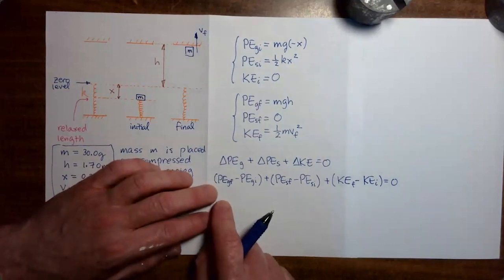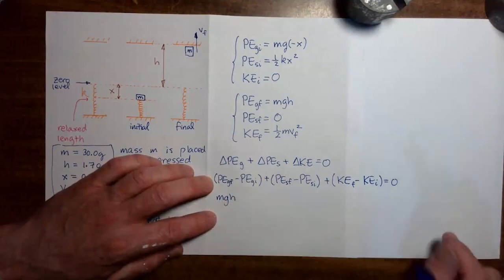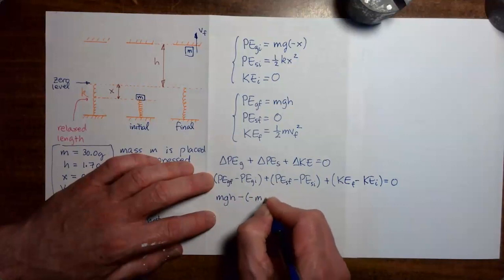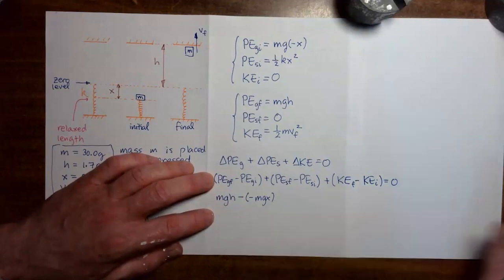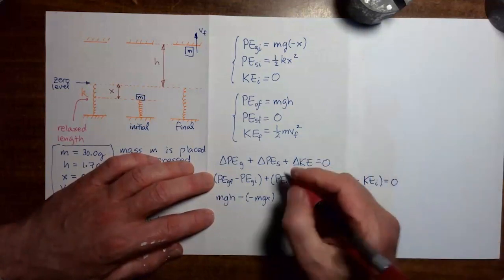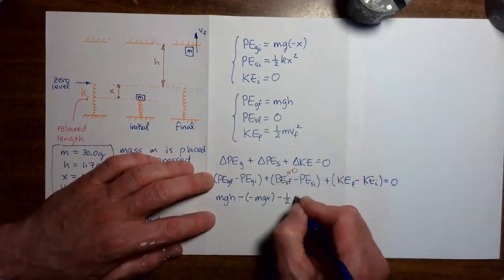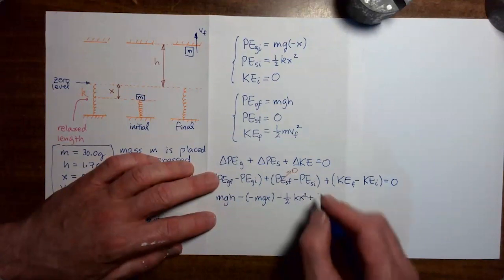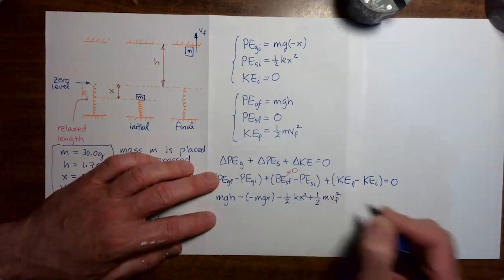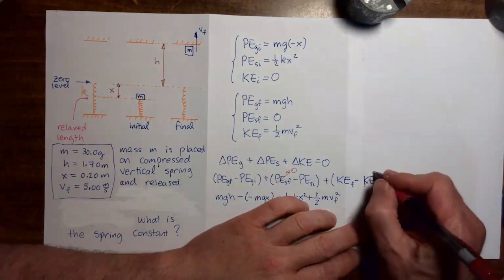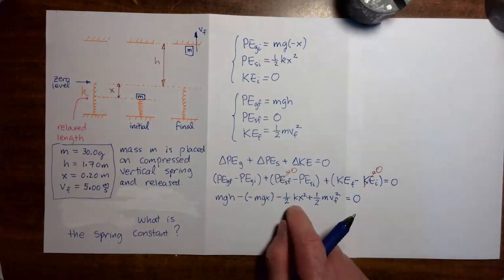Now let's make the substitutions. Gravitational potential final is mgh. Initial gravitational potential is negative mgx, so we're subtracting something negative. Spring potential energy final is zero, and minus spring potential energy initial gives minus one-half kx squared. Plus kinetic energy final, which is one-half mv-final squared. And kinetic energy initial is zero. Now let's solve this for the spring constant.